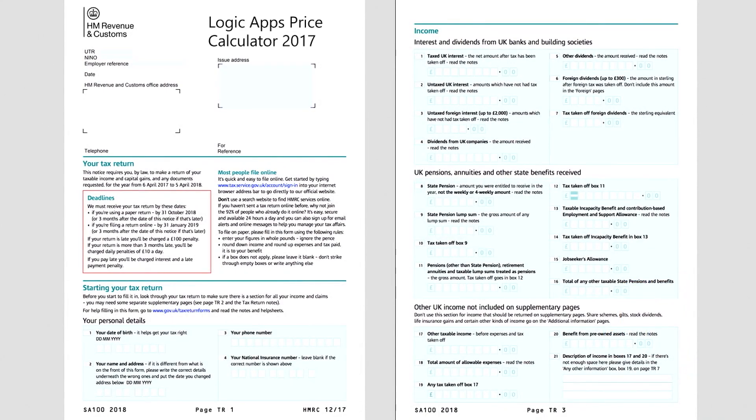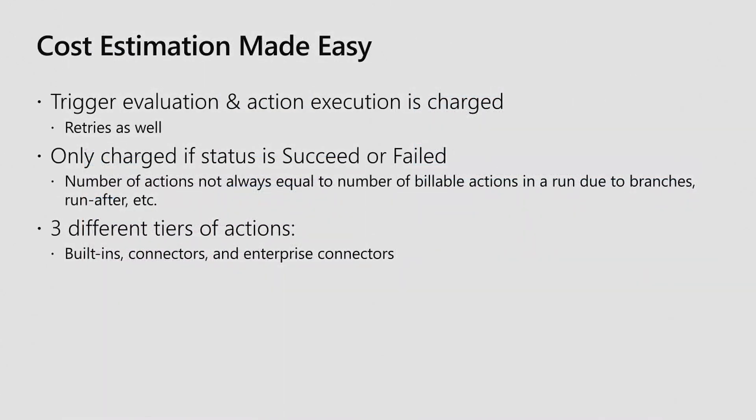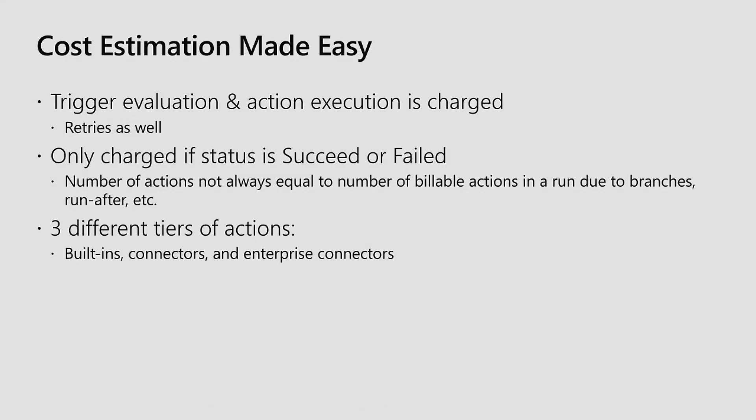Regarding cost estimation: about a year ago it was complicated to figure out how much your Logic App would cost. We've made it much simpler — really three bullet points. Trigger evaluation costs money, and action execution costs money. Retries count as well. We only charge if the status is succeeded or failed. The number of actions you see in the designer doesn't necessarily equal the actions you'll be billed for — if you have a condition with two actions in each branch, only one branch executes per run, so you're billed for two actions instead of four.